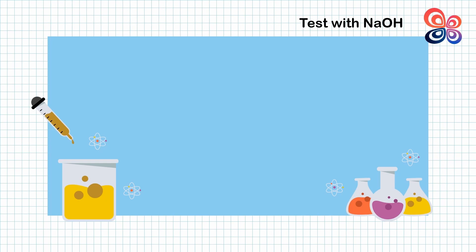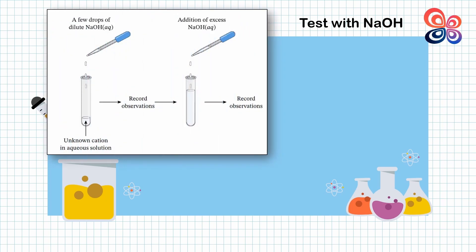First, the sodium hydroxide test. A few drops of sodium hydroxide are dropped into the test tube containing unknown cation in solution. Record the changes that happen to the solution.